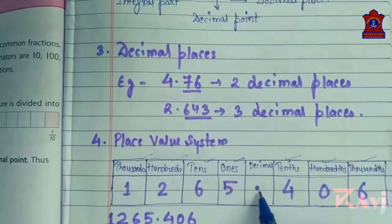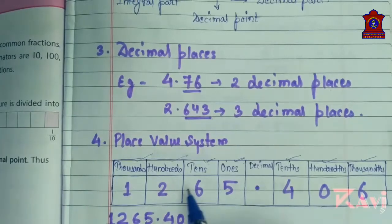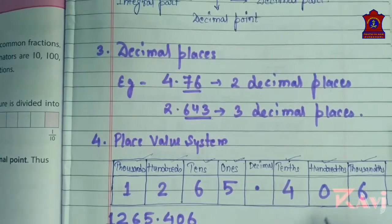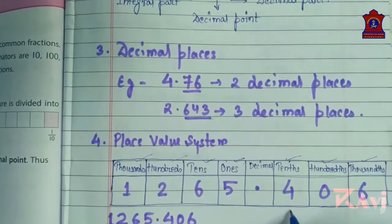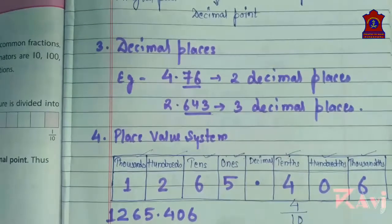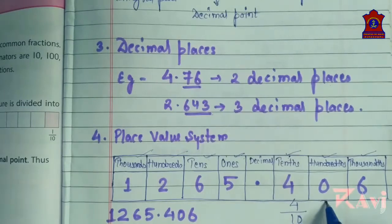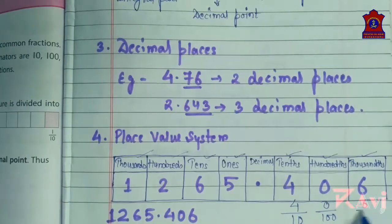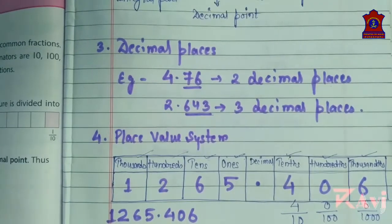For example, 1265.406. If you arrange the decimal number in the place value system, you can easily write it. Here, 4 in the decimal part is 4/10, 0 is 0/100, and 6 is 6/1000 as it is at the thousandths place.